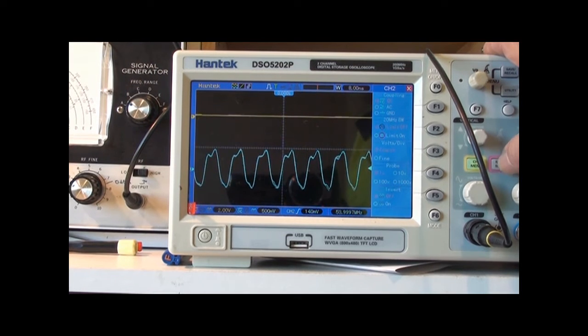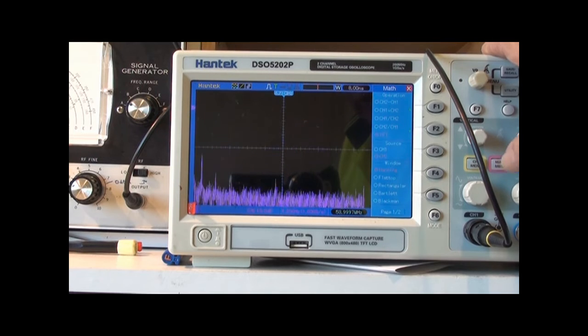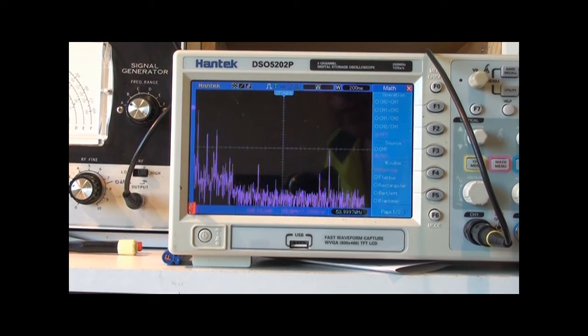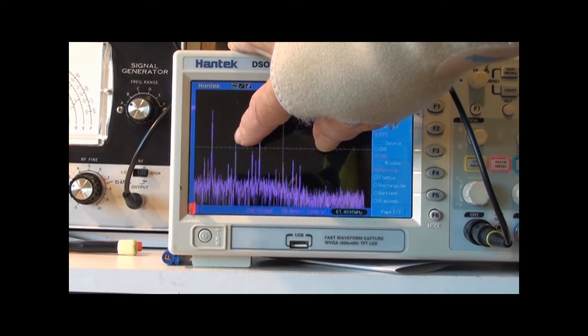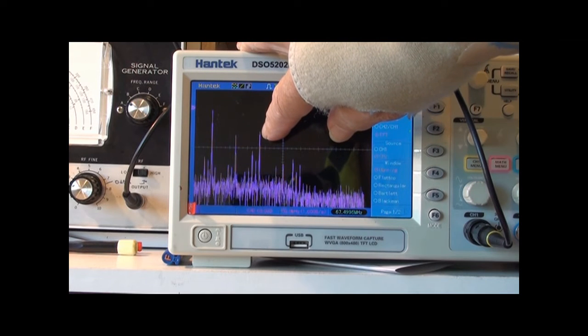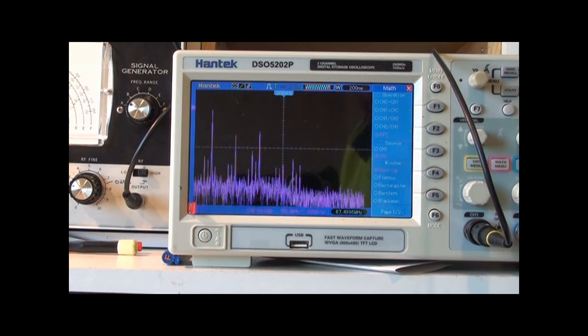And we can have a quick look at the harmonics that are left. There shouldn't be too many left. So that's 50 megs per division. That's 50. That'll be 108. That'll be the third harmonic. 160 something.